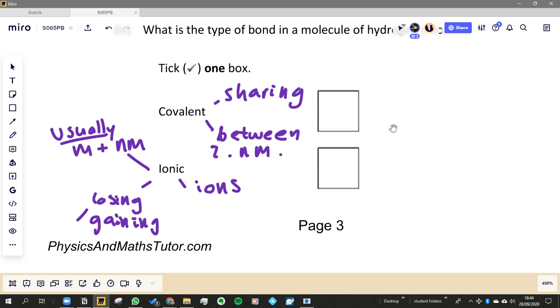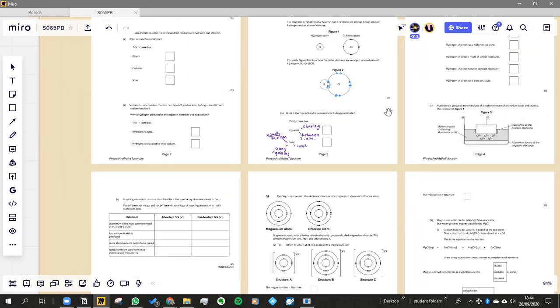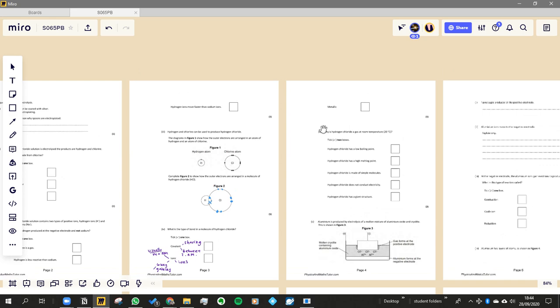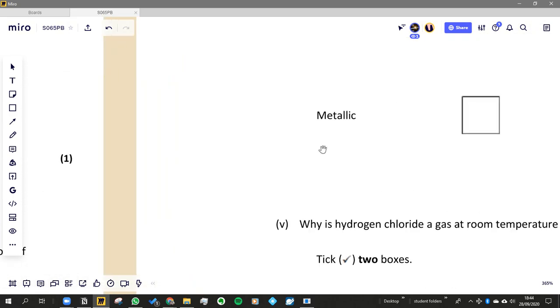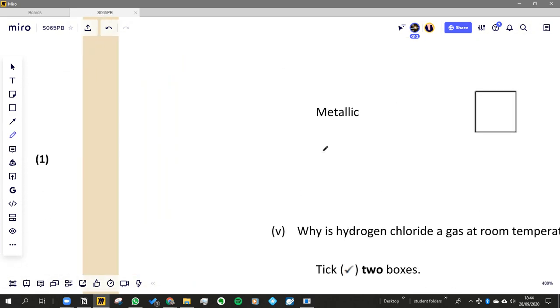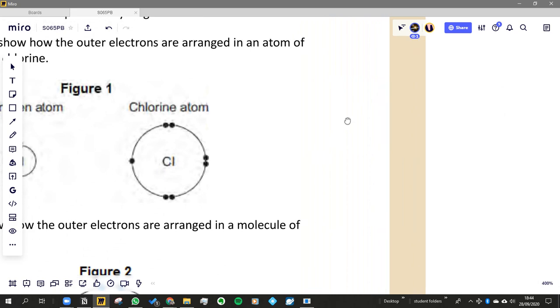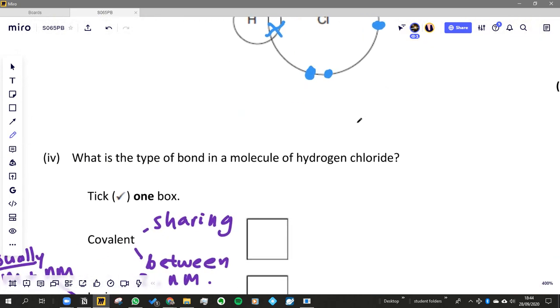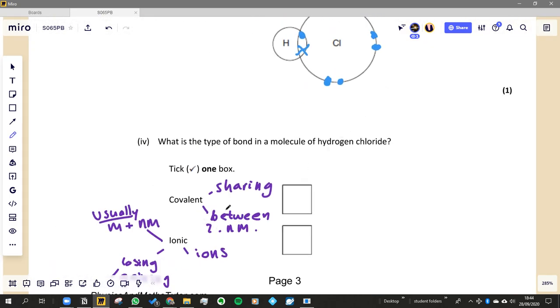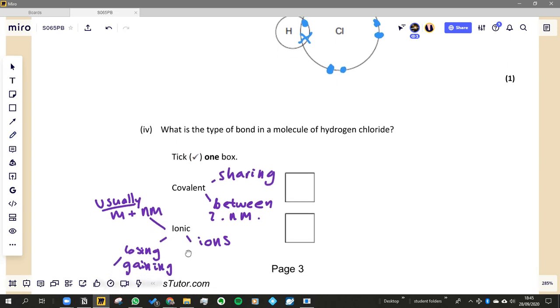The third one was over the page, slightly irritatingly. The third one is metal and metal. So the first one was sharing electrons between two non-metals. The second one was giving and receiving electrons.